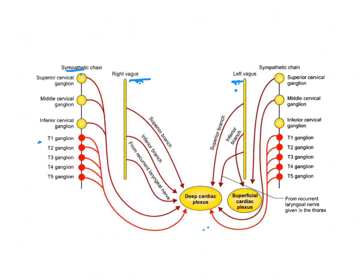The sympathetic nerves are derived from the upper three to five thoracic segments of the spinal cord. They are cardio-acceleratory, and on stimulation they increase the heart rate and also dilate the coronary arteries.